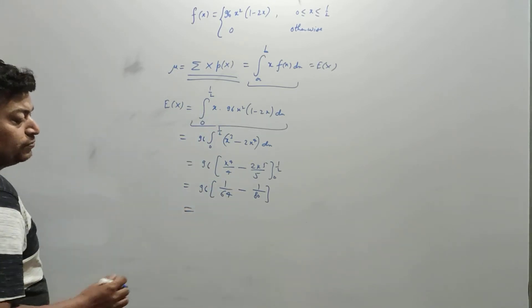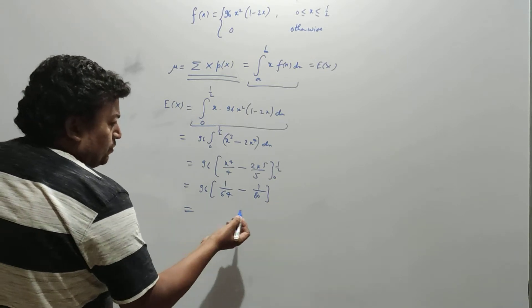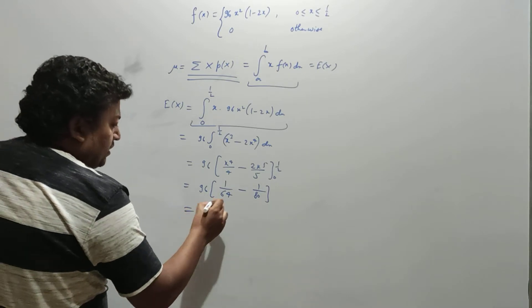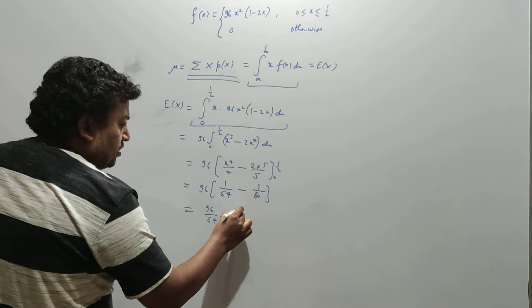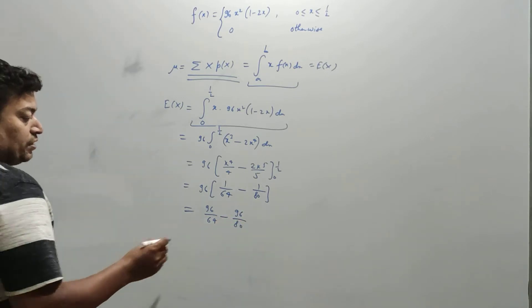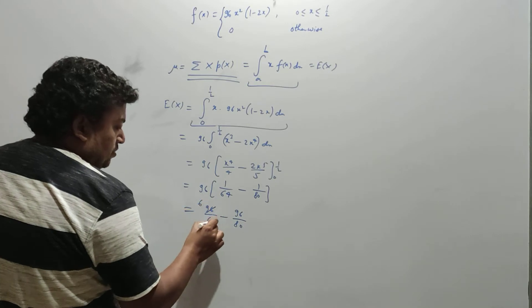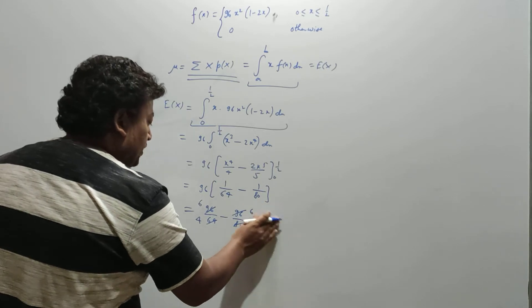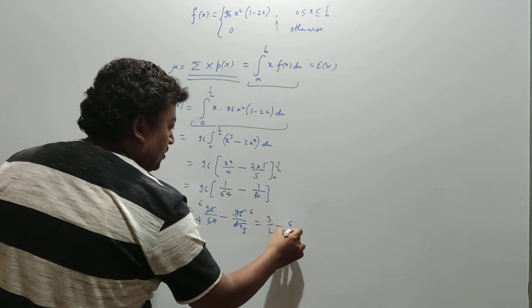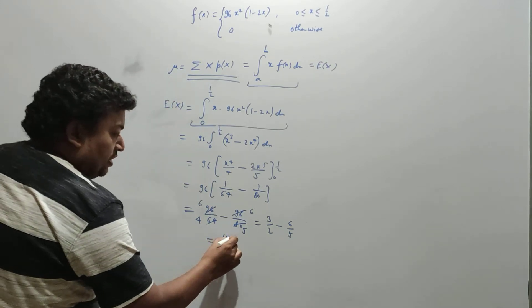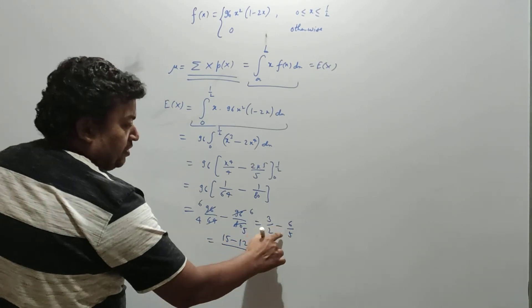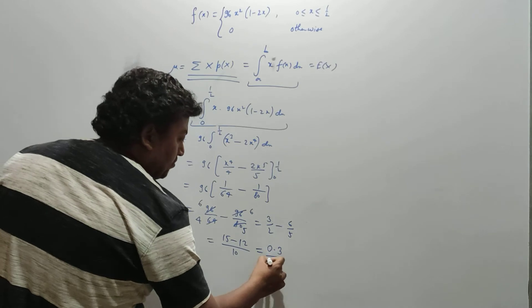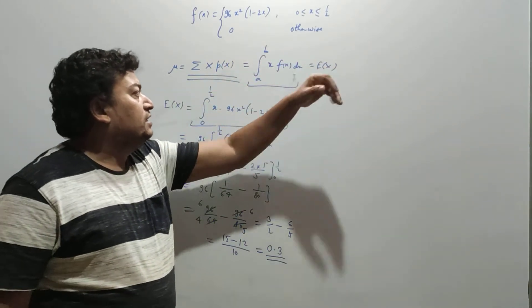So we can multiply by 96 first. That gives 96/64 minus 96/80, which becomes 3/2 minus 6/5. Finding a common denominator: 15/10 minus 12/10 equals 3/10. So 0.3 is the mean in this case.